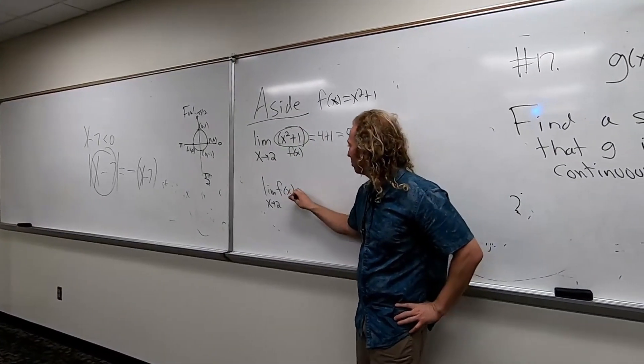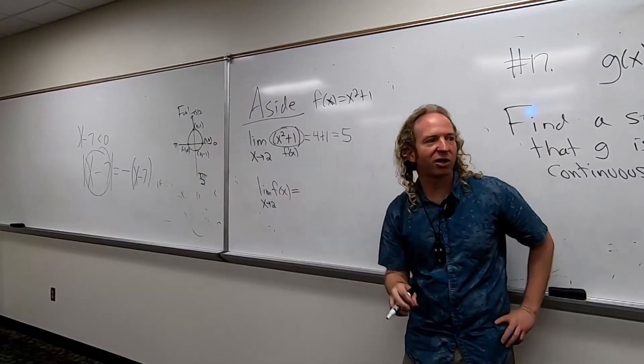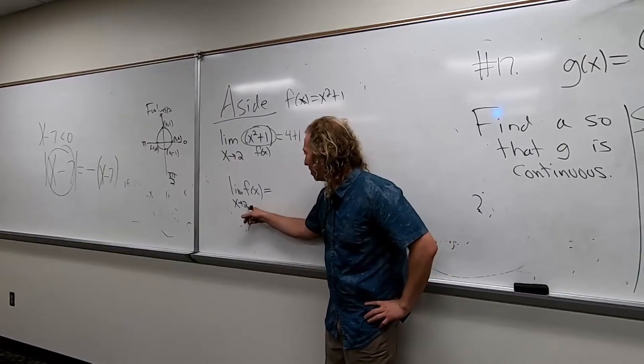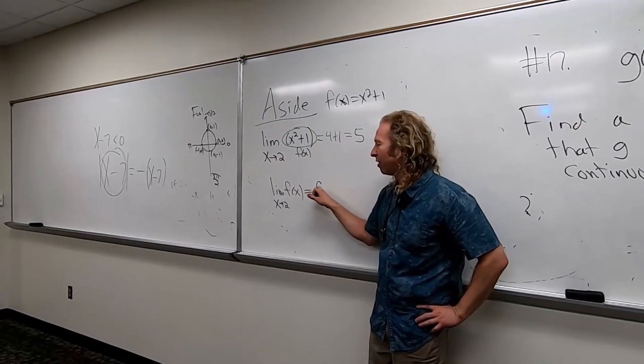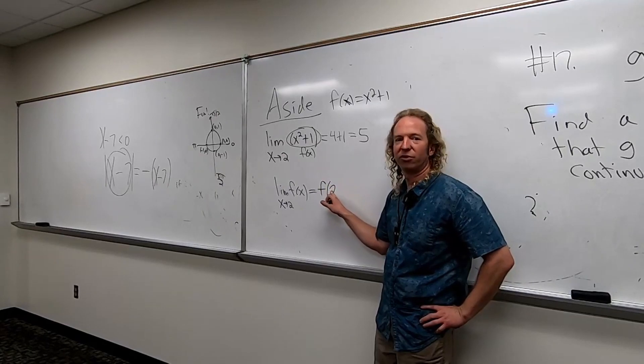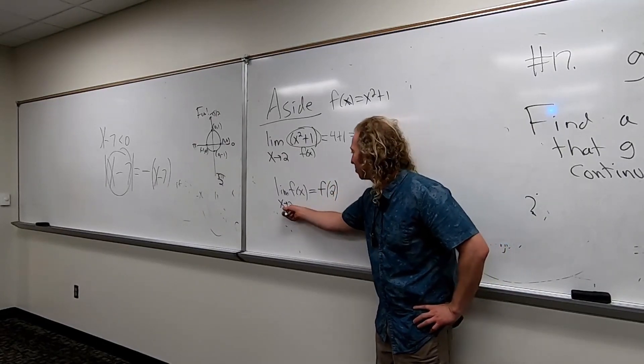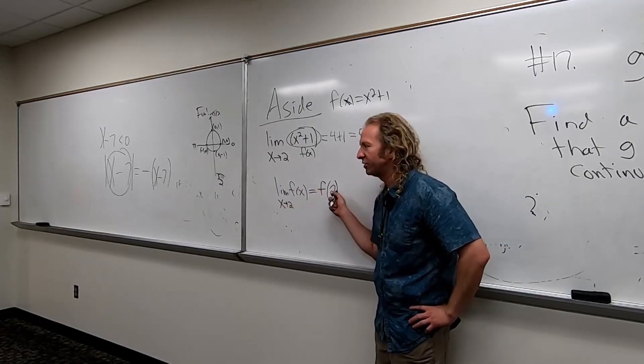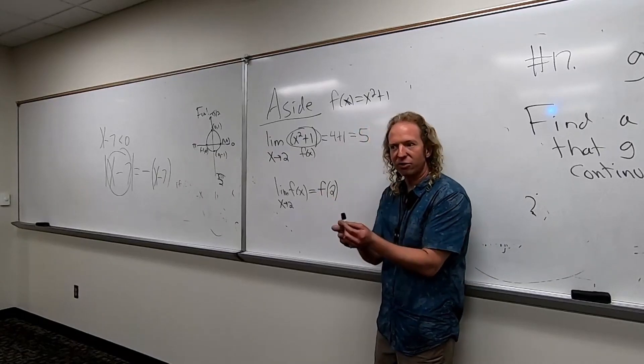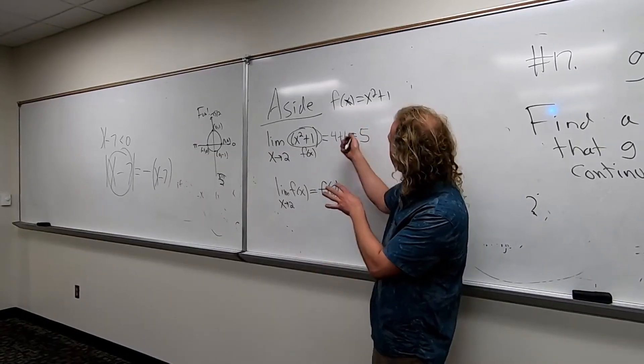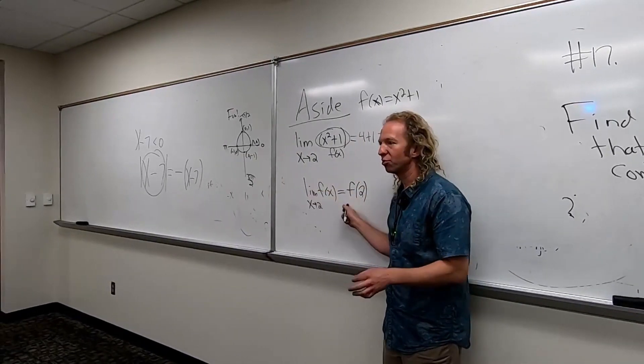So according to the definition of continuity, this is equal to f of 2. Remember, limit as x approaches c of f of x equals f of c. That's the definition of continuity. So because this is a continuous function, this is true.